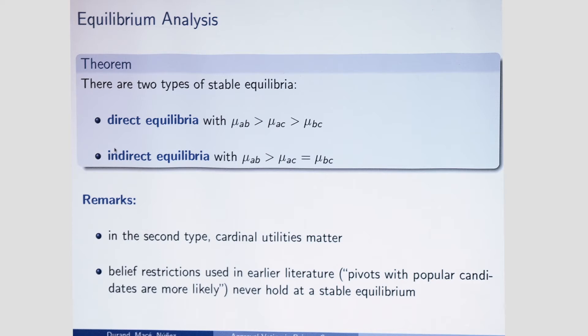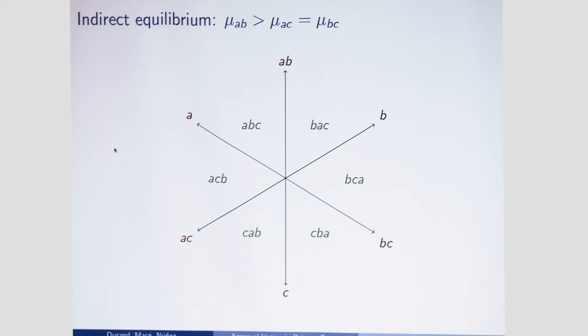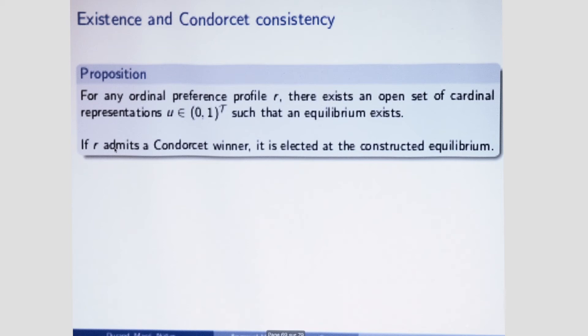In direct equilibria the magnitudes are ordered, and from this order we can derive the best reply. In indirect equilibria some best replies are derived from the ordering and some depend on utilities. Regarding Condorcet consistency, we do not have full existence of stable equilibria, but we have conditional existence: for every ordinal profile, there is some cardinal representation for which a stable equilibrium exists, and in this equilibrium the Condorcet winner is elected when one exists.